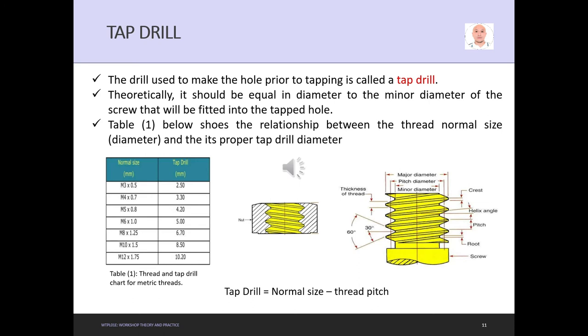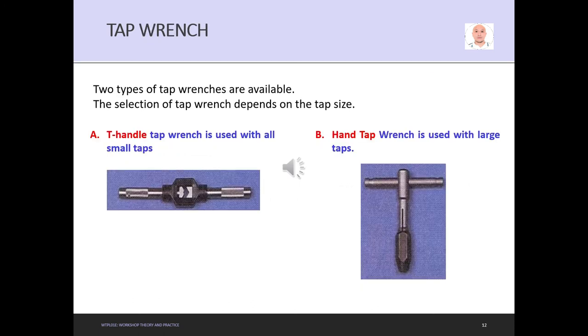There are two types of tap wrenches available. The selection depends on the tap size. Number one: the handle tap wrench is used with all small taps. The other one, the hand tap wrench, is used with large taps. It depends on the size.